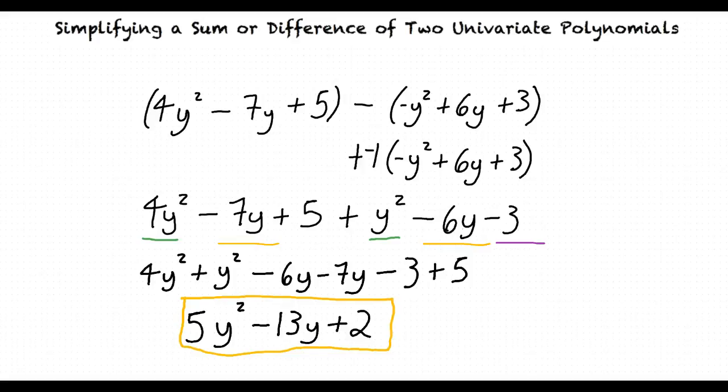we distribute the negative 1 if subtracting or just remove the parentheses if adding. Then we match the like terms and add them together. This results in a single univariate polynomial as our answer.